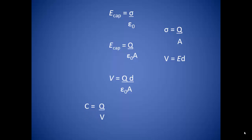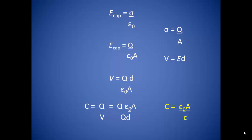Going back to capacitance, which is the charge over the voltage, we can plug in the expression for voltage and we get a wonderfully simple expression for the capacitance: the permittivity of free space times the area of the plates divided by the distance separating the plates. So if we want to increase the capacitance of a system, we would want to increase the area of the plates or decrease the distance between the plates.